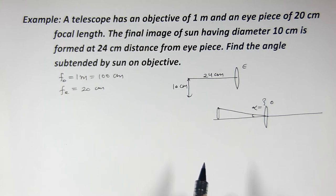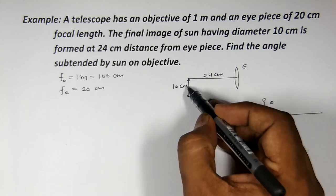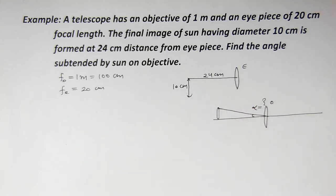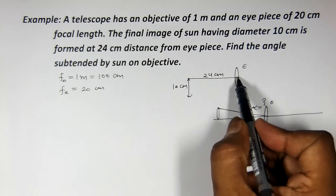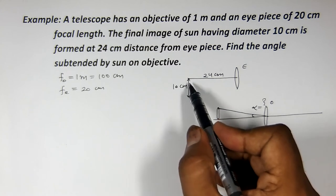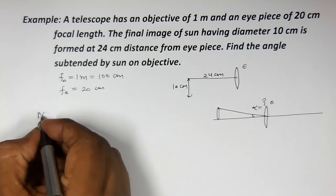To bacchon, kaise is question ko hum deal karein? Sabse pehli baat, yahan par jo final image ban rahi hai sun ki, uska diameter humein de raha hai 10 cm, uski distance jo hai wo 24 cm. To pehli baat to final image infinite par nahi ban rahi hai — ek particular distance di hai 24 cm. Jaise hum near point ki baat karte hain, yani ki 25 cm ki jagah humein distance 24 cm di hai, to humein isko near point wale case se deal karna hoga.